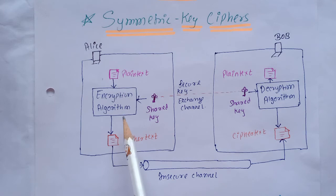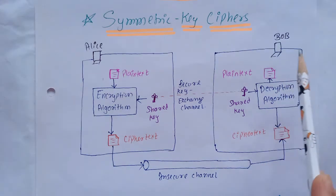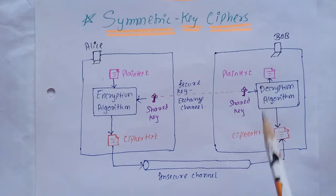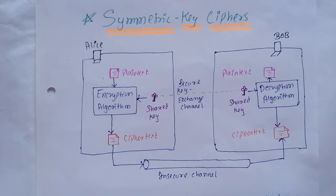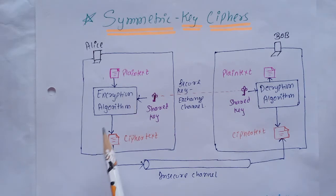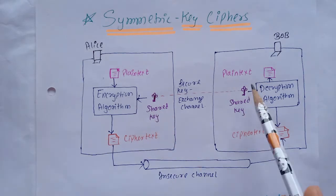After encryption we get the cipher text which is transmitted through the channel to Bob. Bob decrypts the cipher text to get the plain text using the decryption algorithm which also requires the key. The key is exchanged using a secure channel and the cipher text is transmitted via an insecure channel. The decryption algorithm is the inverse of the encryption algorithm, so we retrieve the plain text.